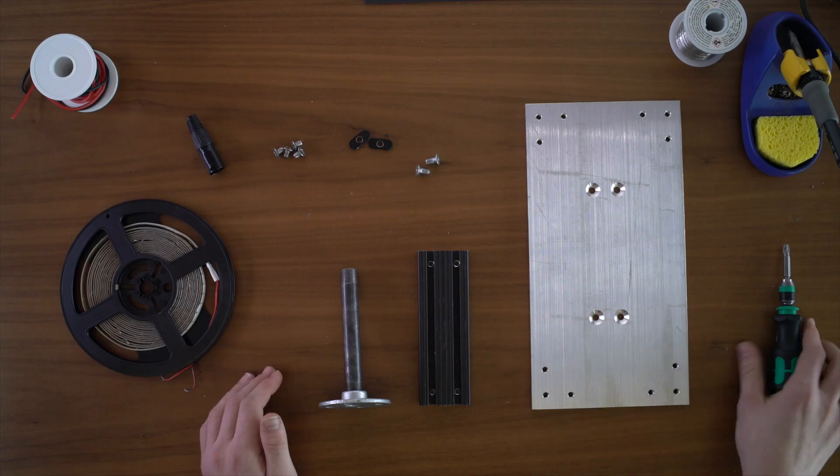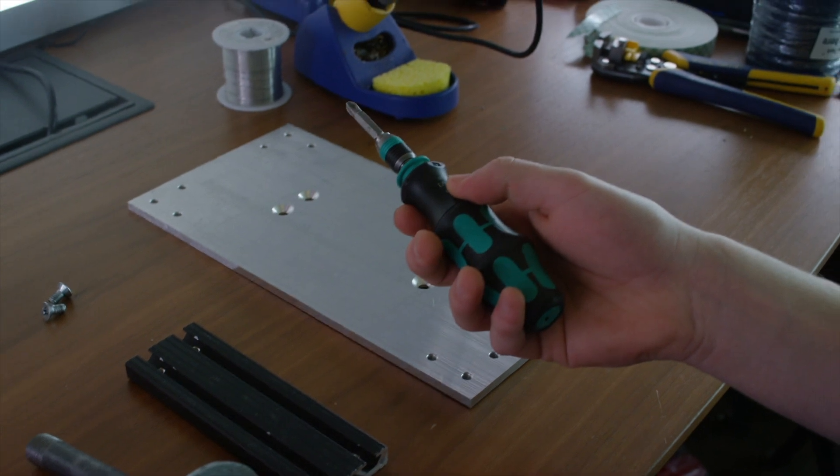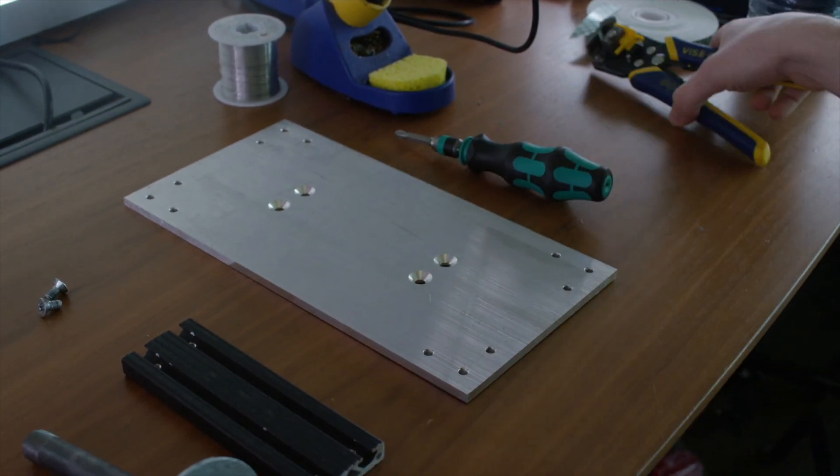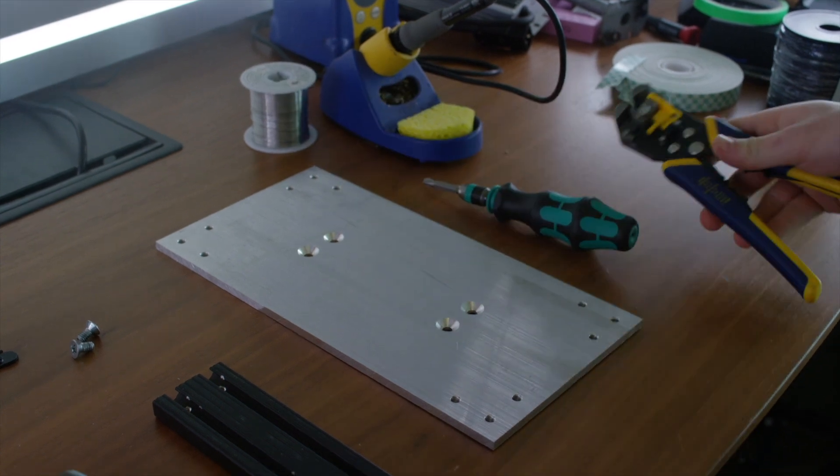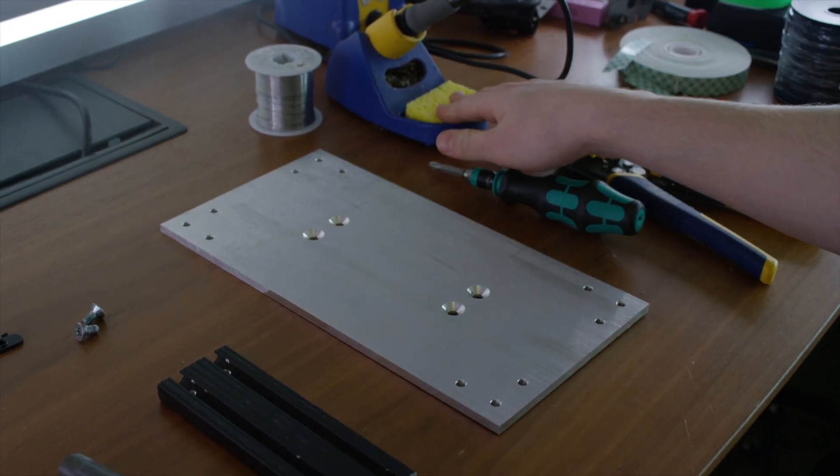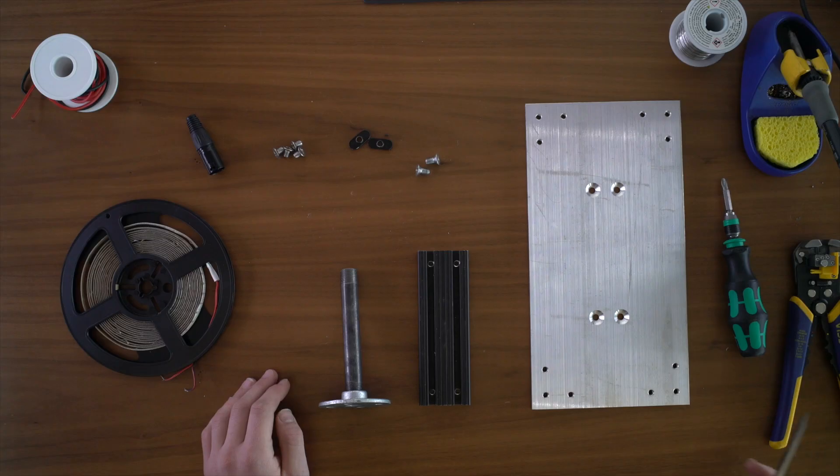In order to build this you're going to need a Phillips 3 screwdriver, some wire strippers, I'm using these vise grips, a soldering iron and some solder, and lastly a pair of scissors.